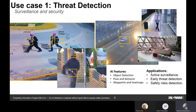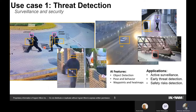Additionally, if someone leaves a bag somewhere and walks away, it could be a threat — possibly containing explosives. The system captures that and notifies the relevant persons. It can also capture the person's face and record a three-to-five second video clip as proof of the incident. You can then search for that specific person using their captured face across the entire database to identify them.